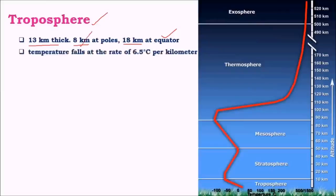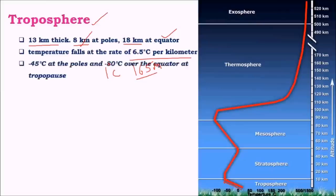The most important feature of this layer is that temperature falls with increase in height — this is called the lapse rate. On average, the lapse rate is about 6.5 degrees Celsius per kilometer, or about 1 degree Celsius for every 165 meters. At the very bottom, average temperature is about 25 to 27 degrees Celsius, but when it reaches the maximum height of the troposphere, temperature is about –50 degrees Celsius.